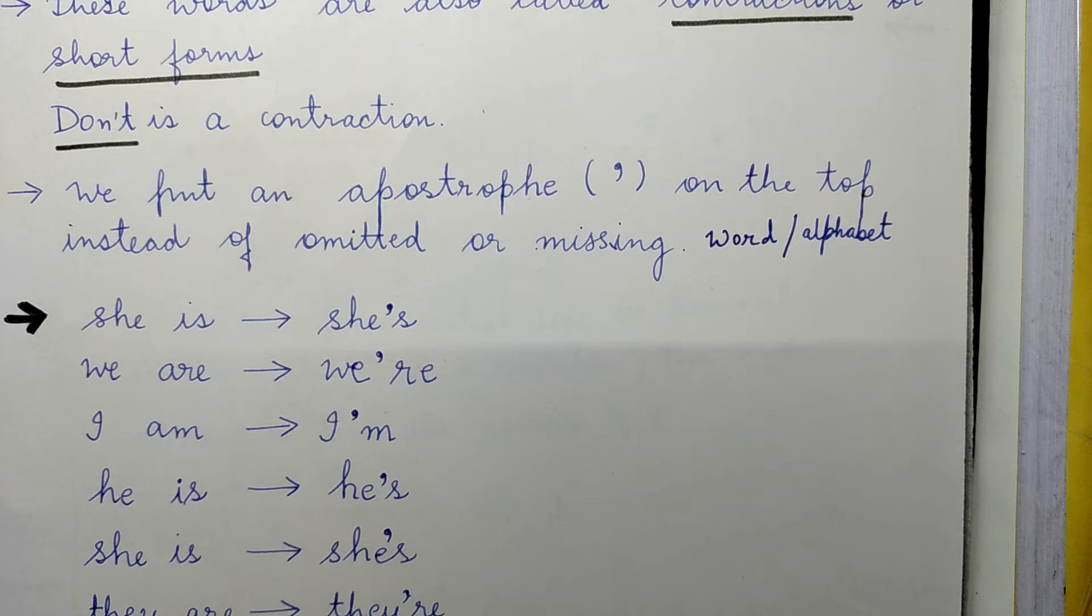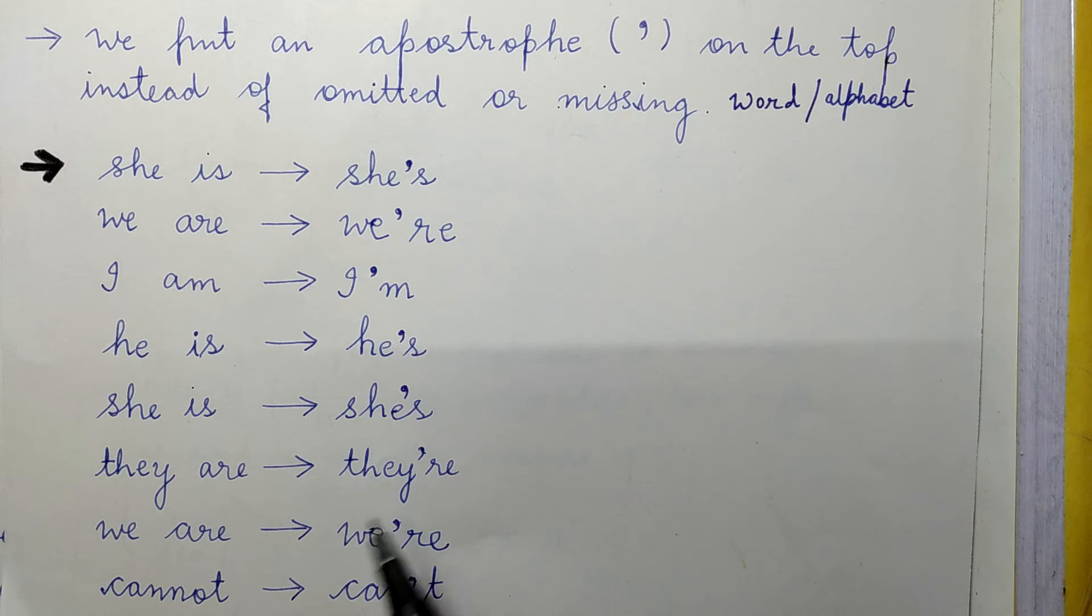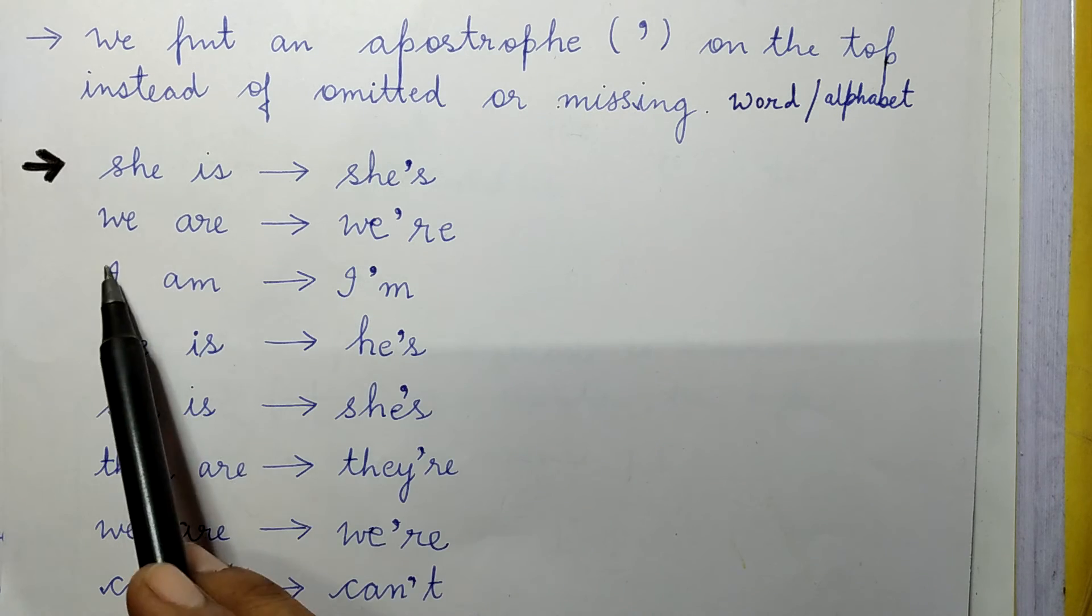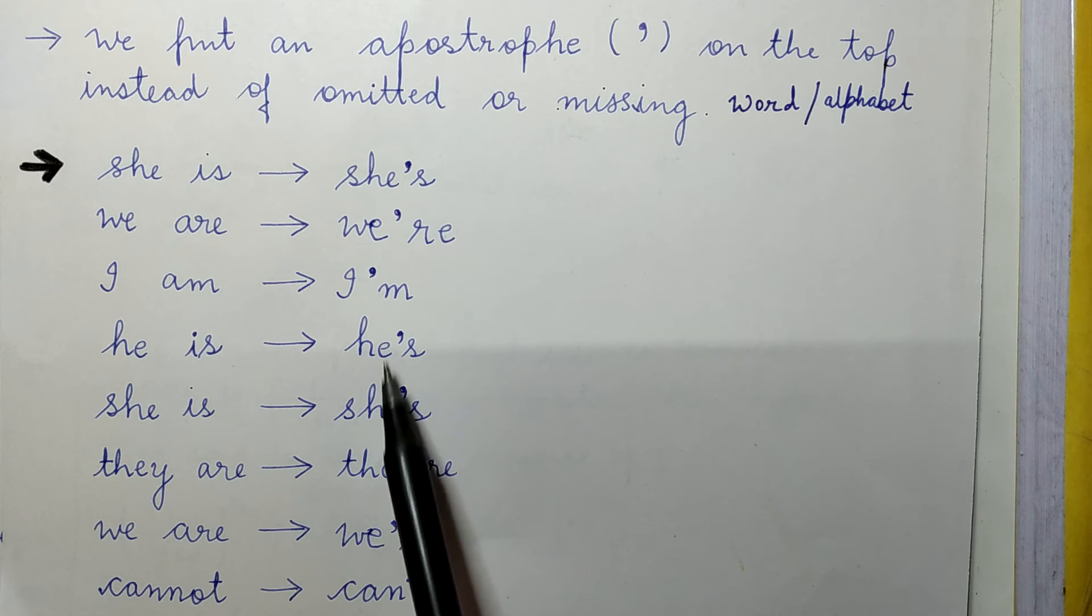Here I've written some more words which are used in short forms or in contracted form. For example, she is written as she's, we are, I am, and it is written in these ways. These are the normal words and these are the short forms.